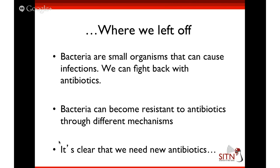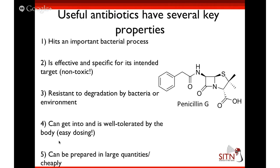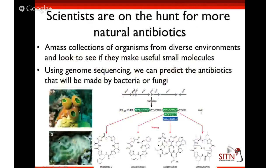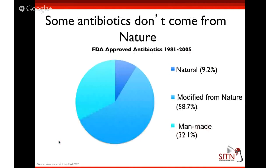A follow-up question on penicillin allergy: you hear about a lot of people being allergic to penicillin. Is there something about what makes it a good antibiotic that also makes people susceptible to allergies? Or is this an early problem with allergic reactions that's subsequently solved in newer generations of antibiotics? The question is: does making an antibiotic more effective or more potent make it more susceptible to causing an immune response?